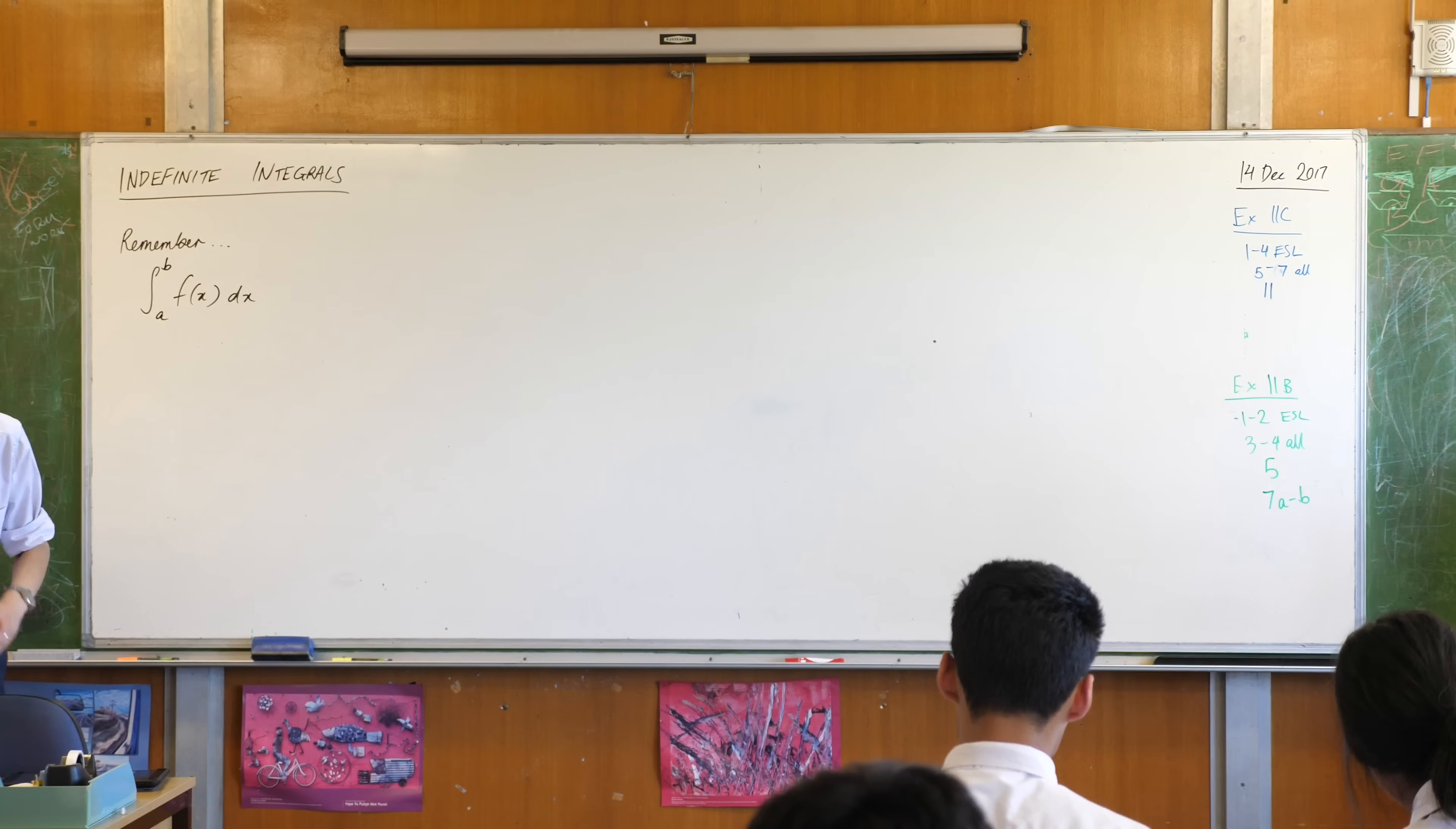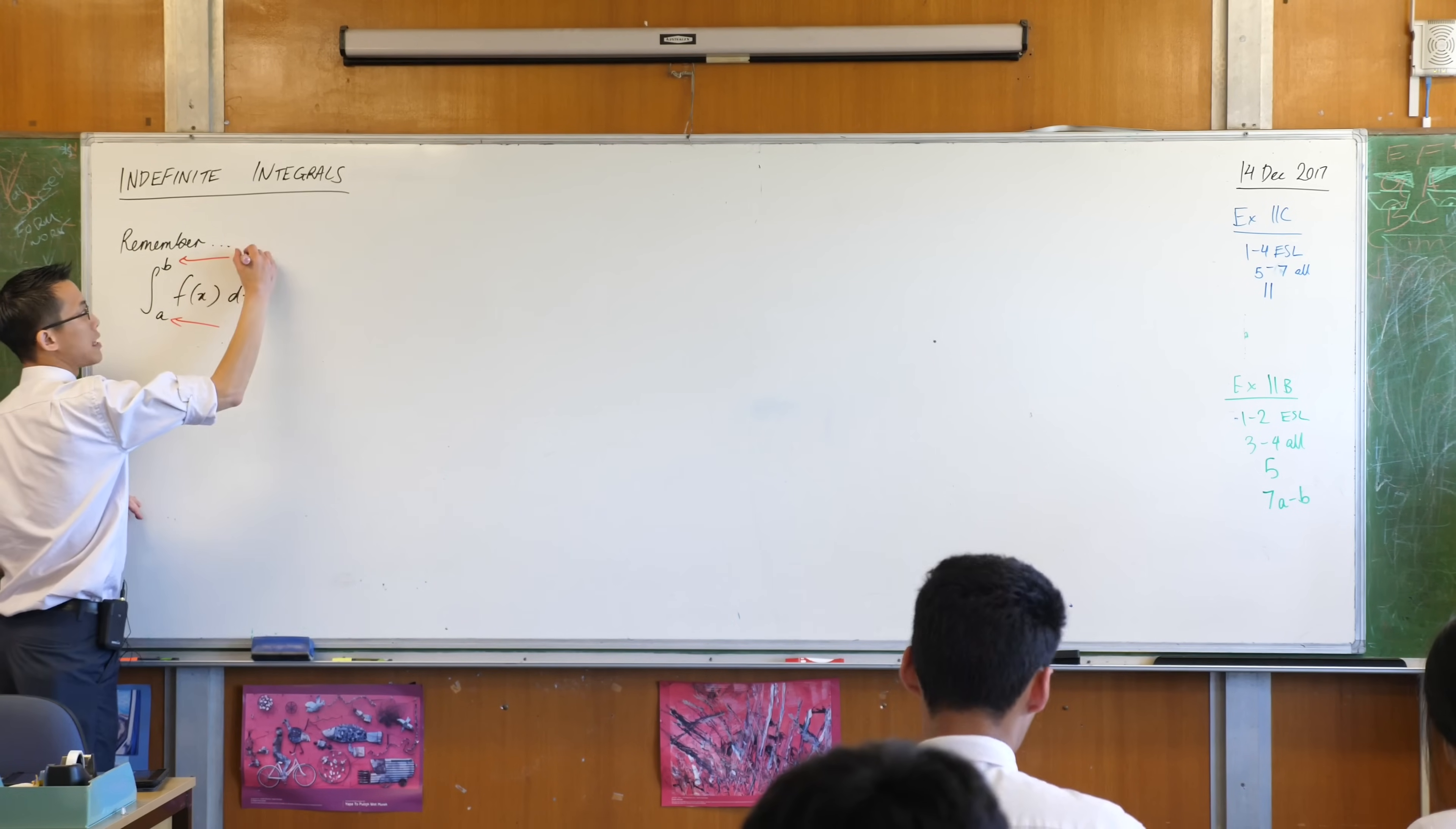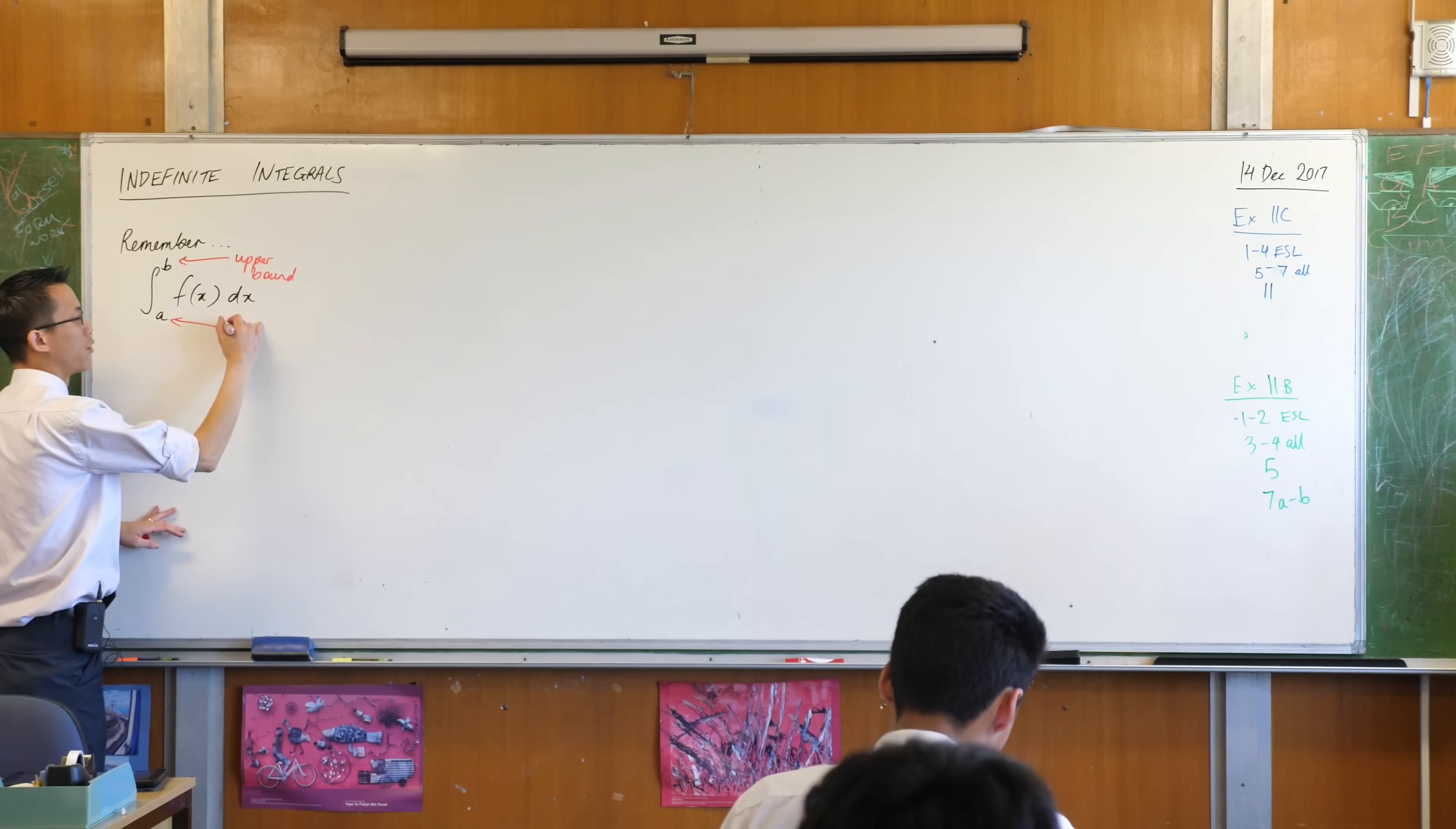Now I'm not sure if I've mentioned this bit of nomenclature before but these things, boundaries, there's one which is at the top, the ending, and then there's one down the bottom which is where you start. So we call this the upper boundary or the upper bound and we call this guy the lower boundary or the lower bound.